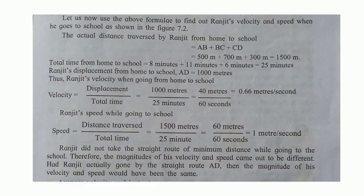Ranjit's speed while going to school: speed equals distance traversed divided by total time. Total distance is 1500 meters and time required is 25 minutes, so the answer is 1 meter per second. Ranjit did not take the straight route of minimum distance, therefore the magnitude of his velocity and speed are different. Had Ranjit actually gone by the straight route AD, the magnitude of his velocity and speed would have been the same.